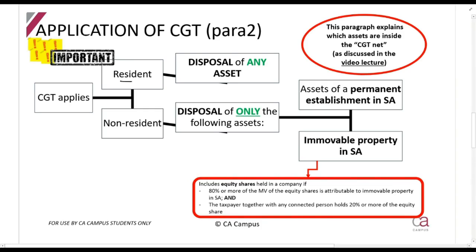For a resident, capital gains tax applies to the disposal of any asset. So if you're a resident and you sell something in South Africa, it applies. If you sell something in America, it applies - whatever asset. If you are a non-resident, it applies - and this is very important - to the disposal of only the following assets.